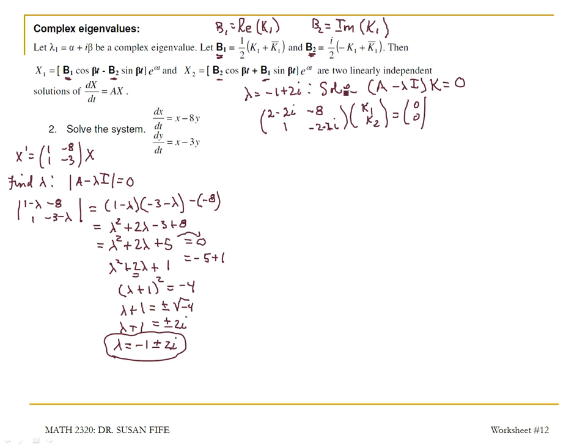When I write out these equations, I'm going to get 2 minus 2i times k1 minus 8 times k2 is equal to 0, and 1k1 plus negative 2 minus 2i times k2 equals 0. This system is going to be dependent, and you could prove that it is by trying to cancel it out.